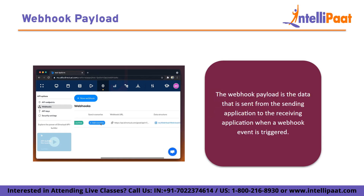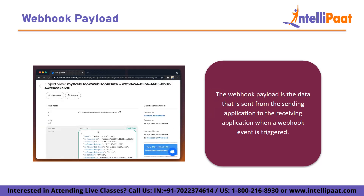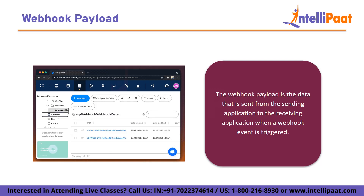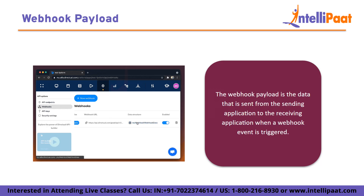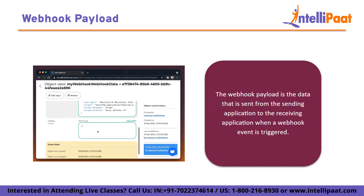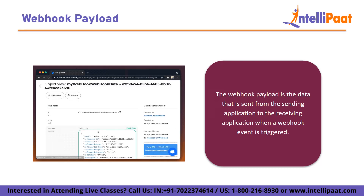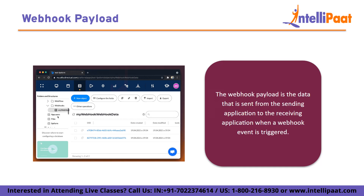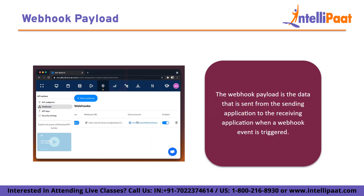Now let's look at webhook payload. The webhook payload is the data that is sent from the sending application to the receiving application when a webhook event is triggered. The payload typically contains information about the event, such as the event type, timestamp, and any relevant data associated with the event. The structure of the webhook payload can vary depending on the applications and can be formatted in various data types such as JSON, XML, or form encoded data. The payload should include all the necessary information that the receiving application needs to process the webhook request and update its own data. For example, if a webhook is triggered when a new order is placed in an e-commerce platform, the payload could include the customer's name, email address, the product ordered, the order total, and the shipping address — which could then be used to update an order database and trigger actions such as sending an order confirmation email.